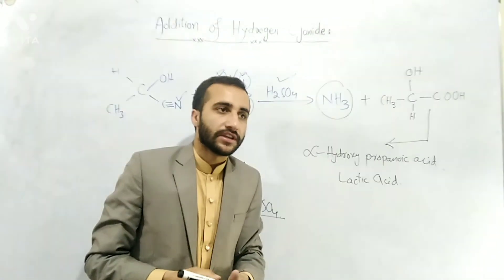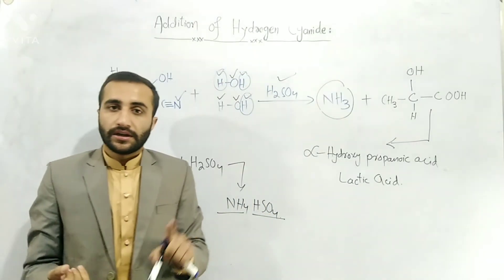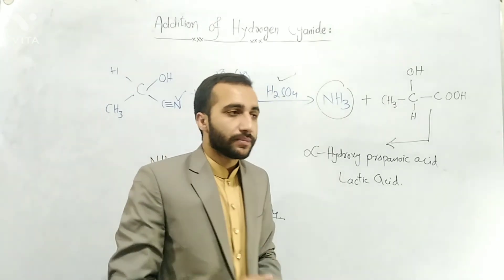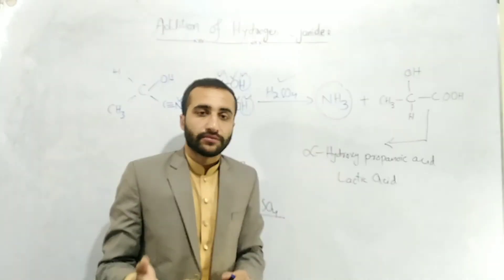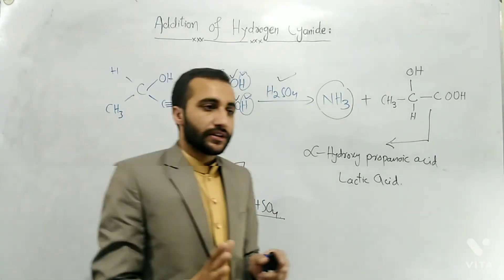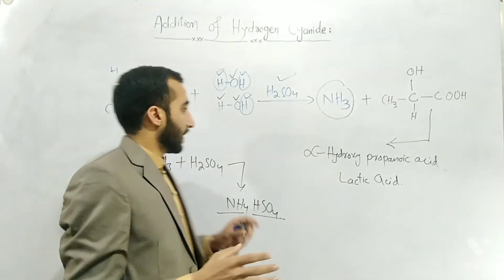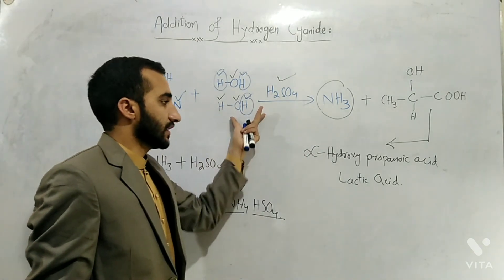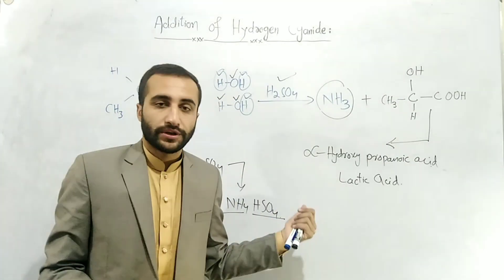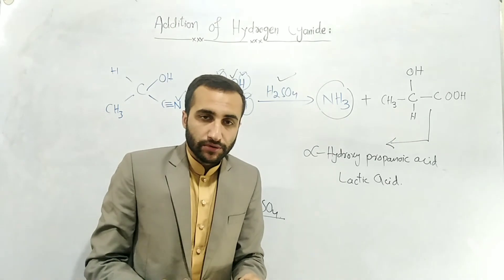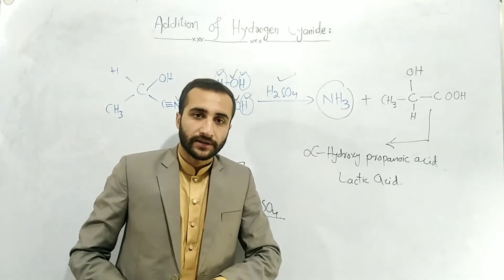Four things you have learned: first, how hydrogen cyanide is added to carbonyl compounds; second, what 'in situ' means — HCN is called in situ because it is produced during the reaction and is unstable; third, the mechanism of HCN addition to carbonyl compounds; and fourth, how acidic hydrolysis of cyanohydrin produces lactic acid. I hope you can understand. If you have any questions, please ask in the comment section. We will see you in the next video.